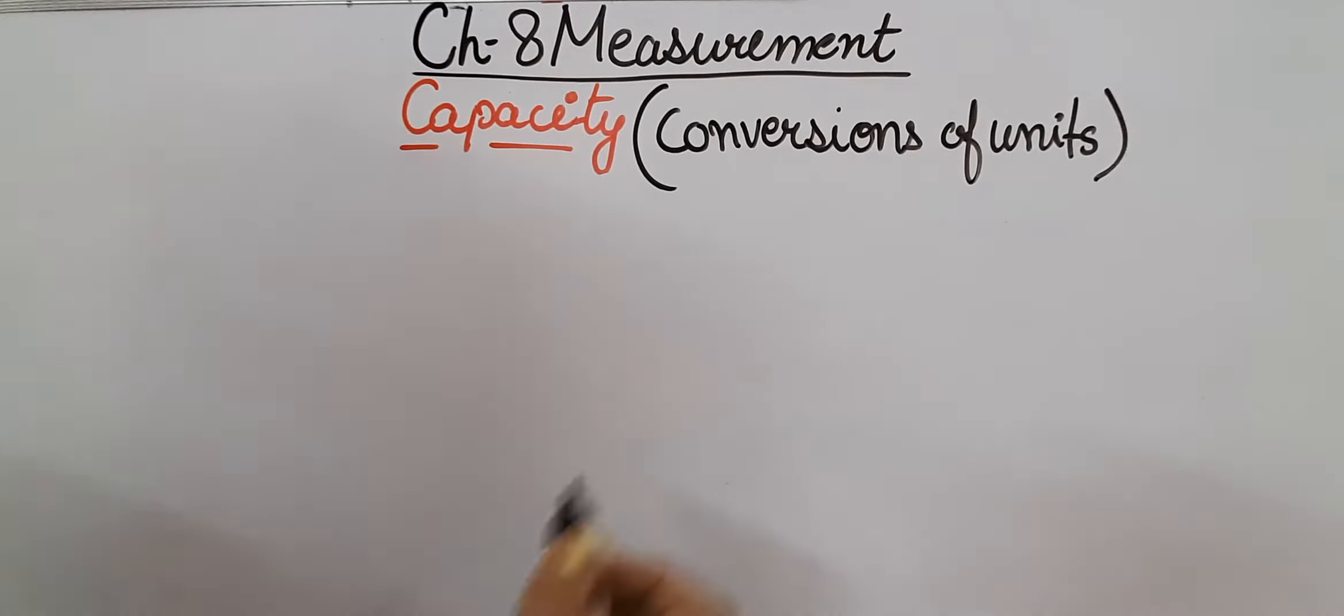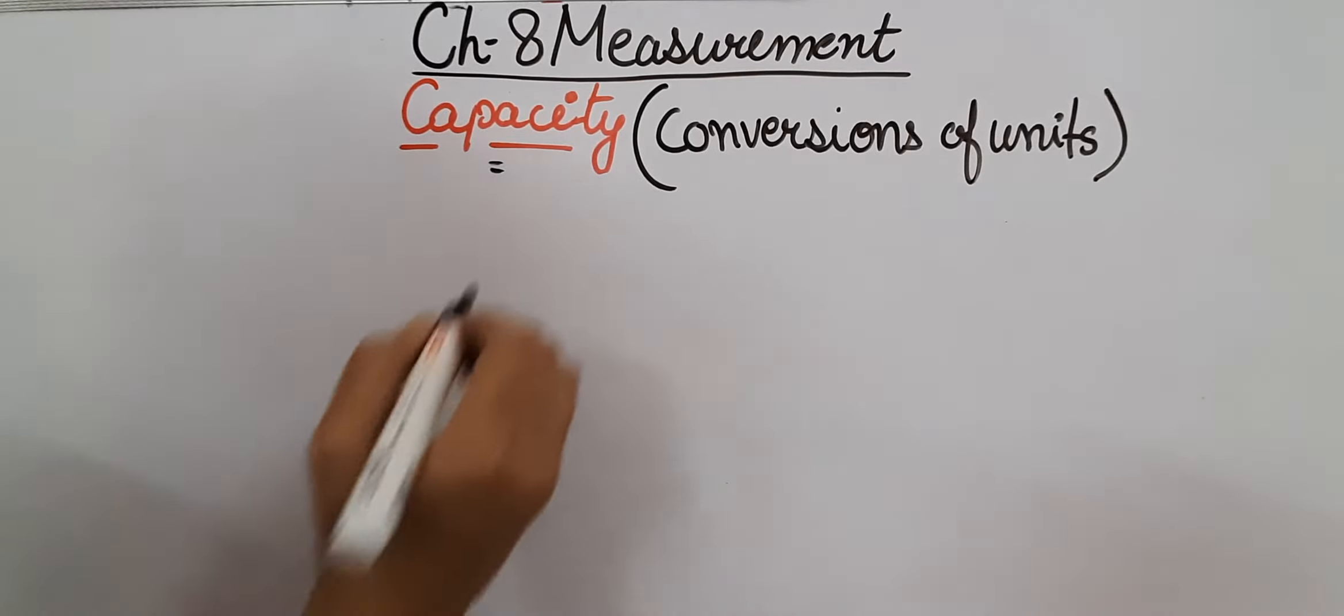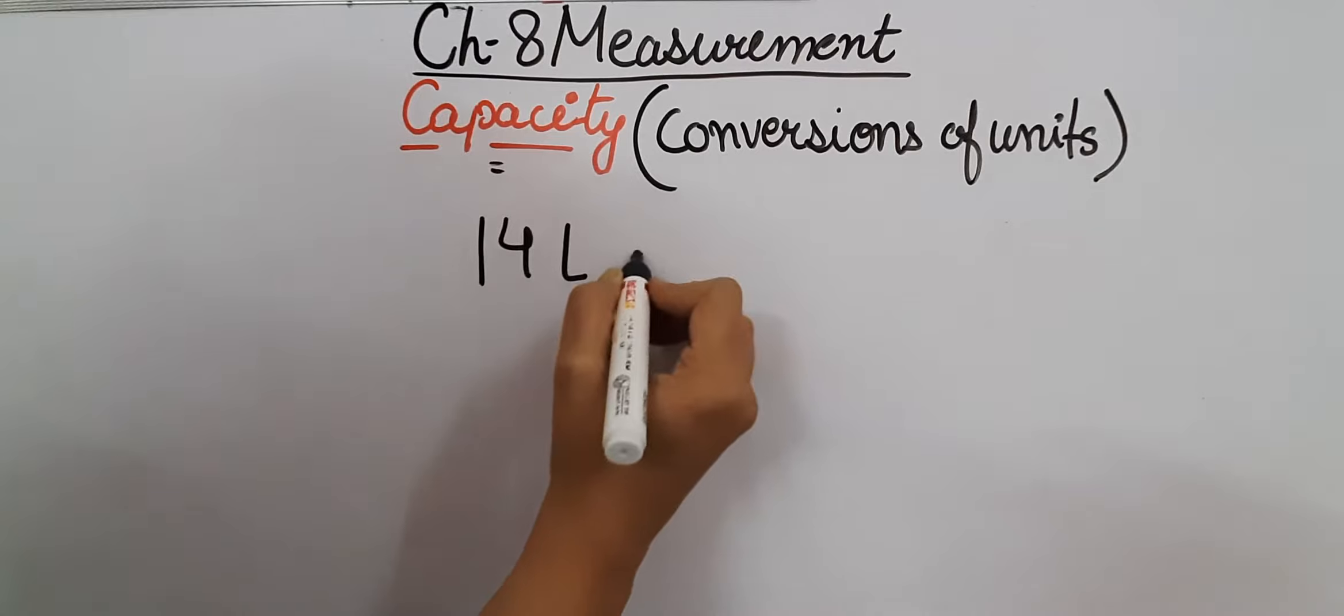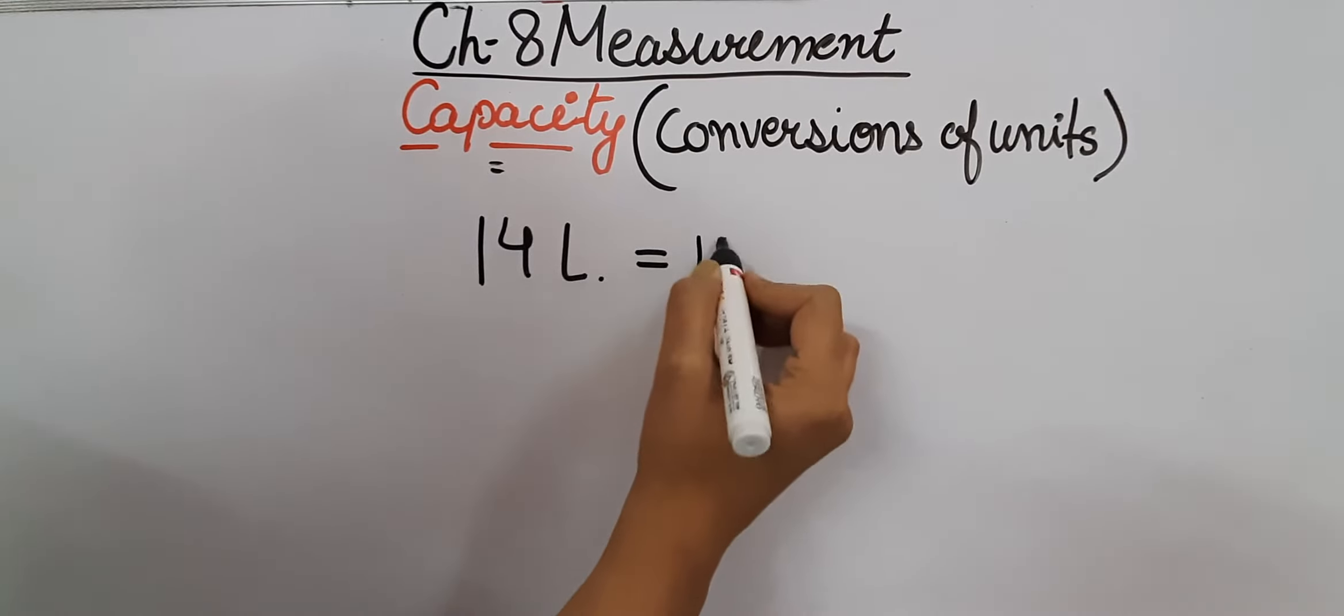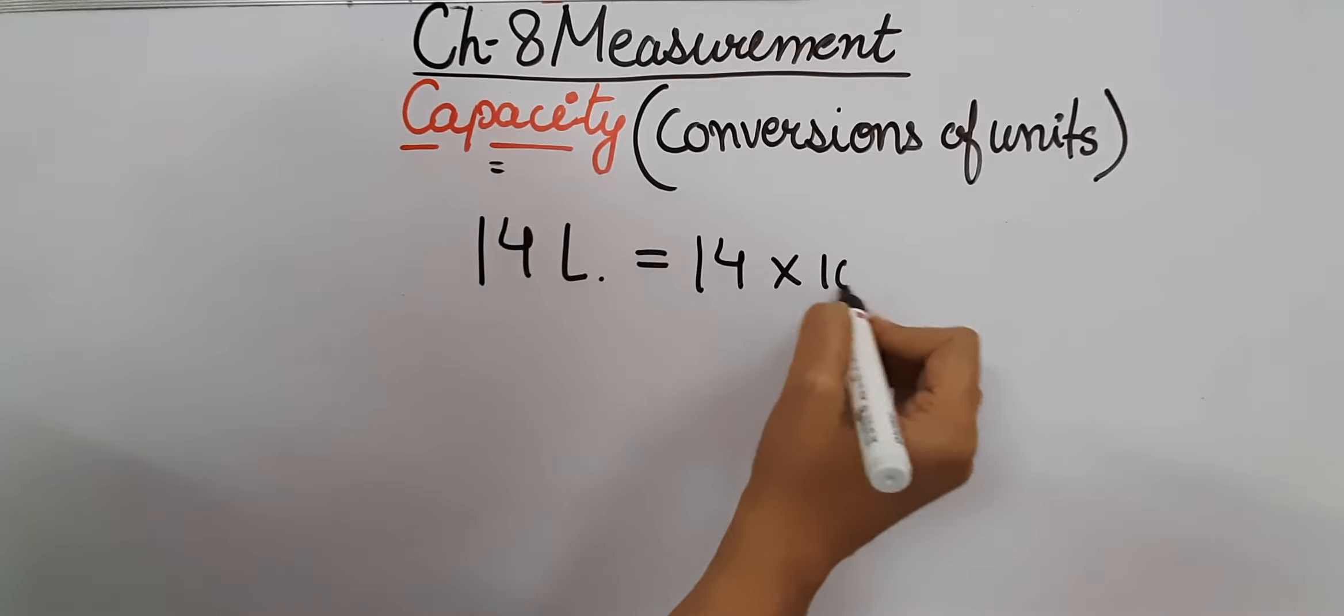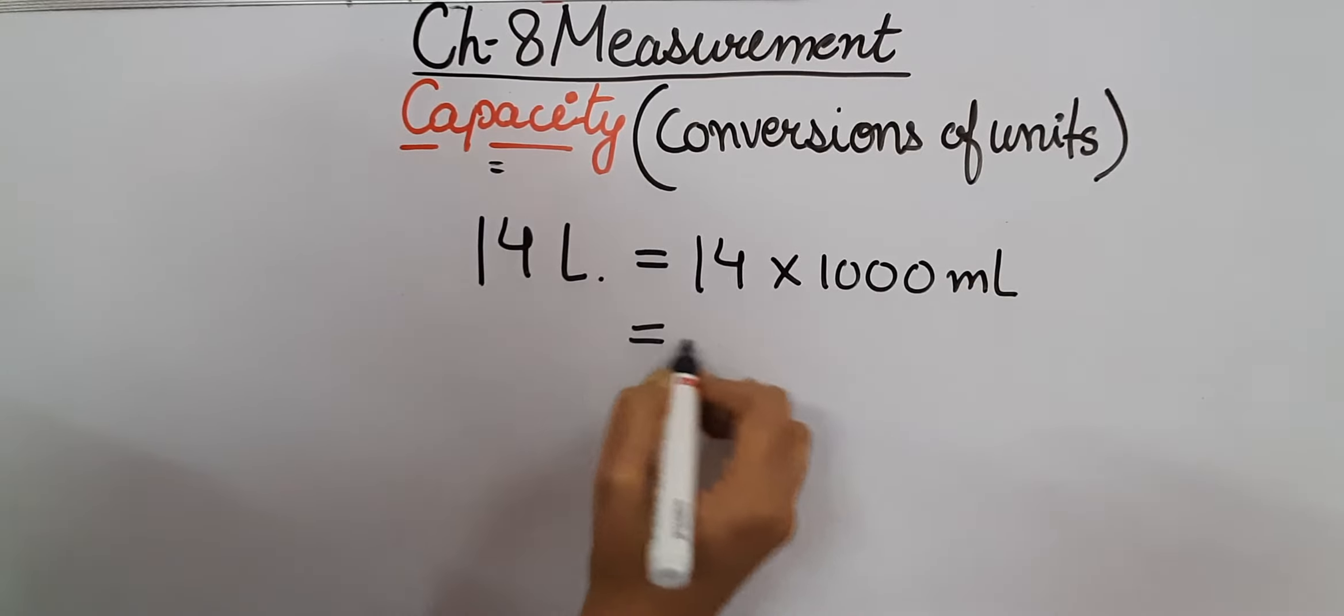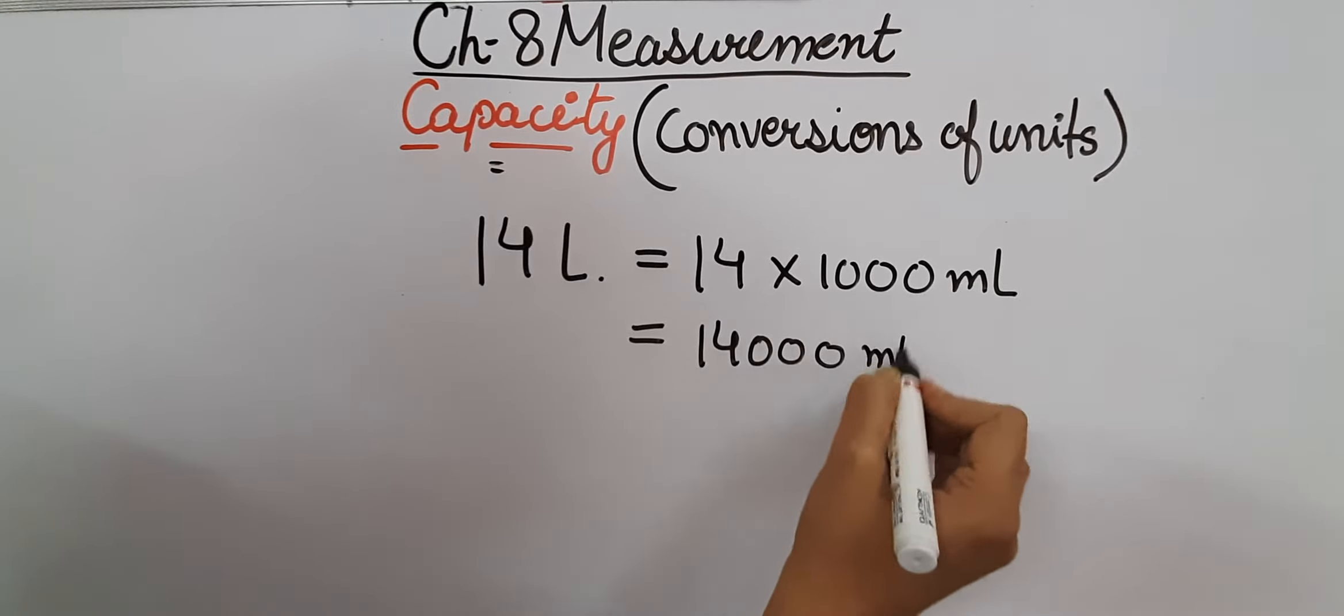Now let us understand the conversion of units of capacity. If we want to convert 14 liters into milliliters, we will simply multiply 14 by 1000 milliliters. Hence we will get the answer as 14,000 milliliters.